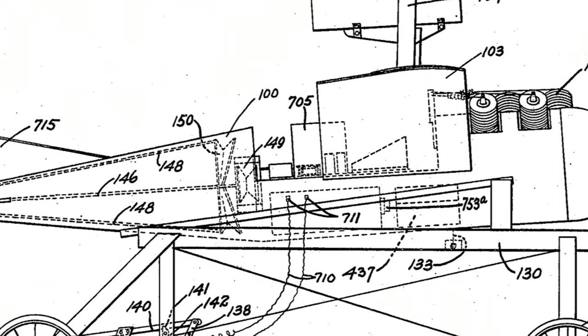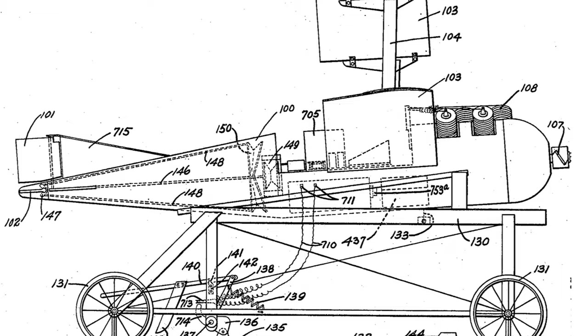Once this number was reached, a cam would release the wings, the engine would shut off, and the bomb would fly its ballistic trajectory to the target.